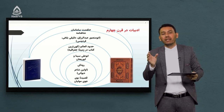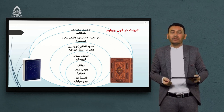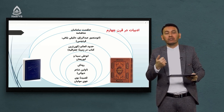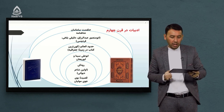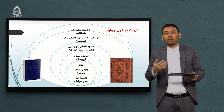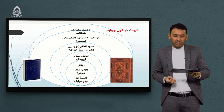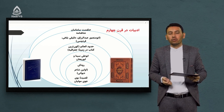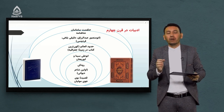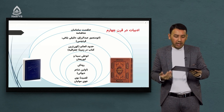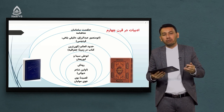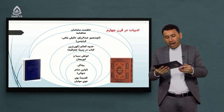سپس فردوسی توسی می‌آید و شاهنامه خود را می‌سراید که دارای پنجاه تا شصت هزار بیت است. سی سال طول می‌کشد تا فردوسی شاهنامه را تنظیم کند. کتاب شاهنامه فردوسی توسی سه بخش دارد: بخش اول اسطوره‌ای، بخش دوم پهلوانی، و بخش آخر تاریخی. کتاب دیگر مهم در قرن چهارم هجری «حدود العالم من المشرق إلی المغرب» است که مهم‌ترین کتاب در زمینه جغرافی است و اطلاعات بسیار کامل و جامعی دارد.